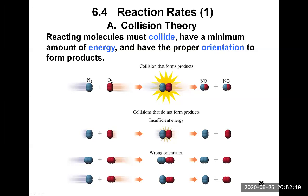You may have collisions, but in the second case shown, even though there is proper orientation, the collision does not bring enough energy, so the molecules cannot pass through the transition state and the reactants remain. In the third case, when the two molecules collide but the orientation is wrong, new bonds cannot form — that is a useless collision. Two examples show how if the nitrogen atoms are not hitting the oxygen atoms, the reactants remain after those collisions.